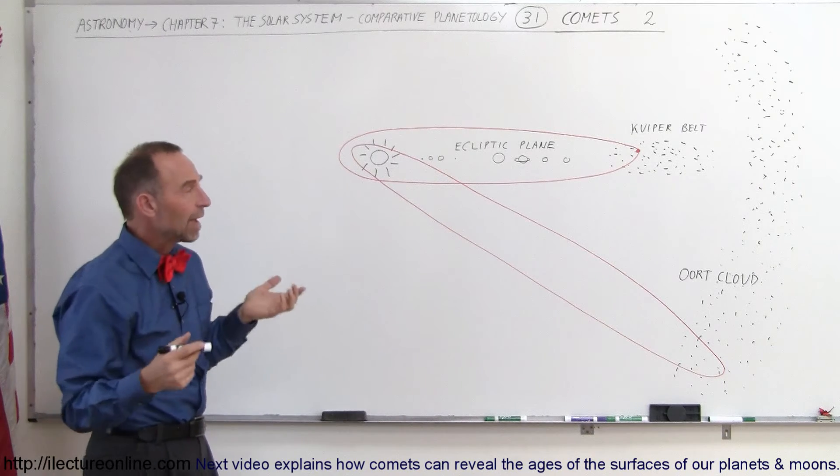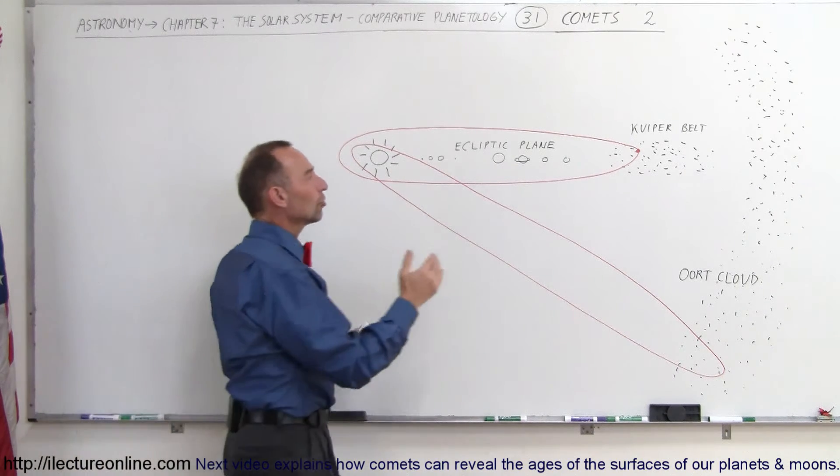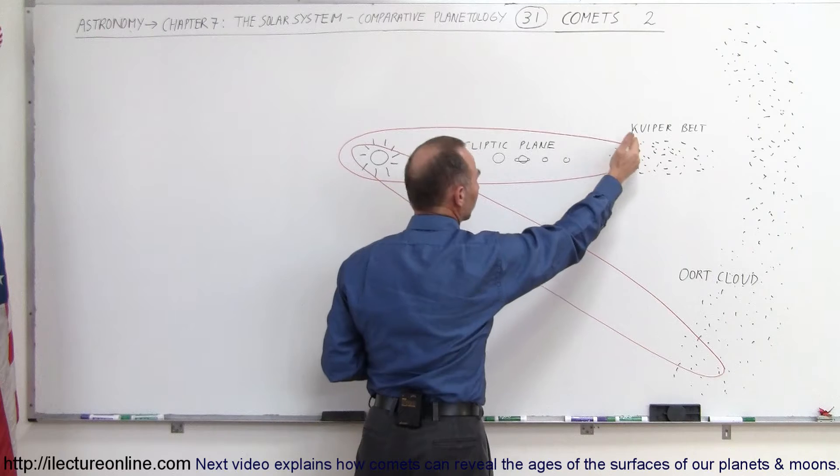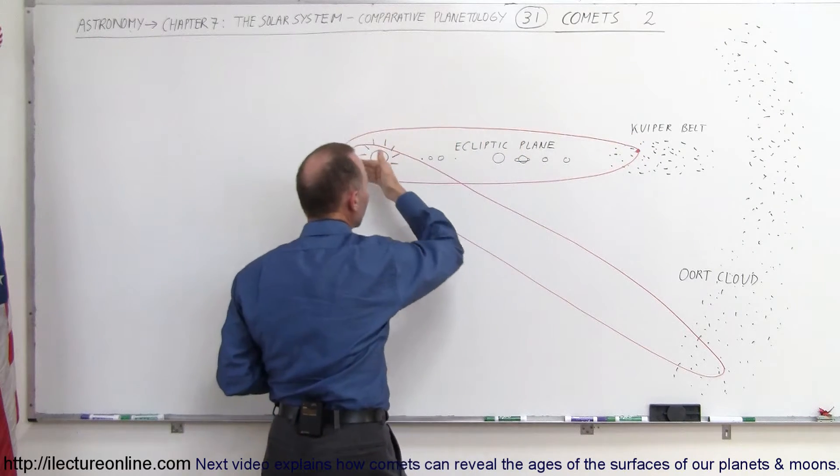And so once in a while we do have a comet coming in, and usually those comets come from the Kuiper Belt, and they streak in inward around the Sun and go back out.